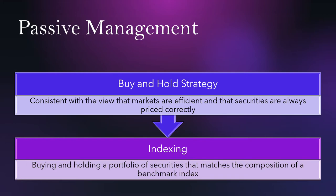Passive management has two strategies as well. The buy-and-hold strategy is consistent with the view that markets are efficient and that securities are priced correctly — basically, if you buy a stock now and hold it, over time you will make money on it. The other strategy is indexing — buying and holding a portfolio of securities that matches the composition of a benchmark index. This is what ETFs use, and we will go into further depth in that chapter.